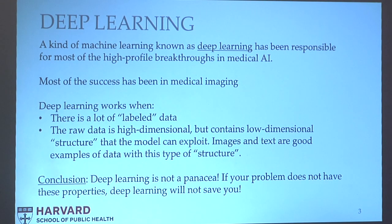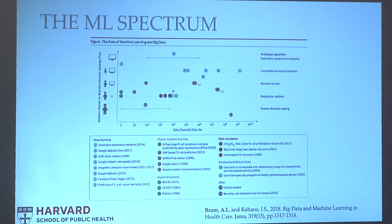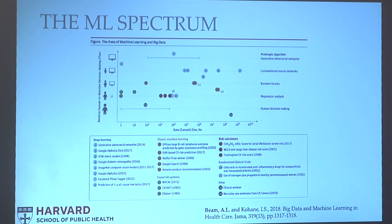The conclusion is that deep learning isn't going to solve all of our problems — it has to meet these two criteria to be a good match. A question we get asked all the time is: is machine learning something new, or is it actually just statistics in disguise? This is a paper that Zach Kohani and I wrote in JAMA last year that attempts to link what's going on in machine learning to previous approaches we've used in healthcare.